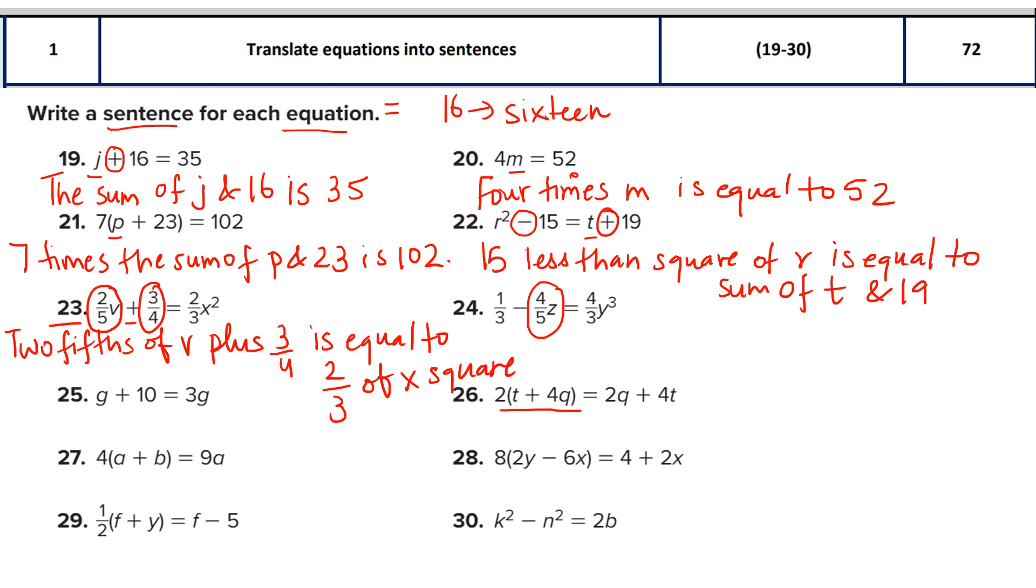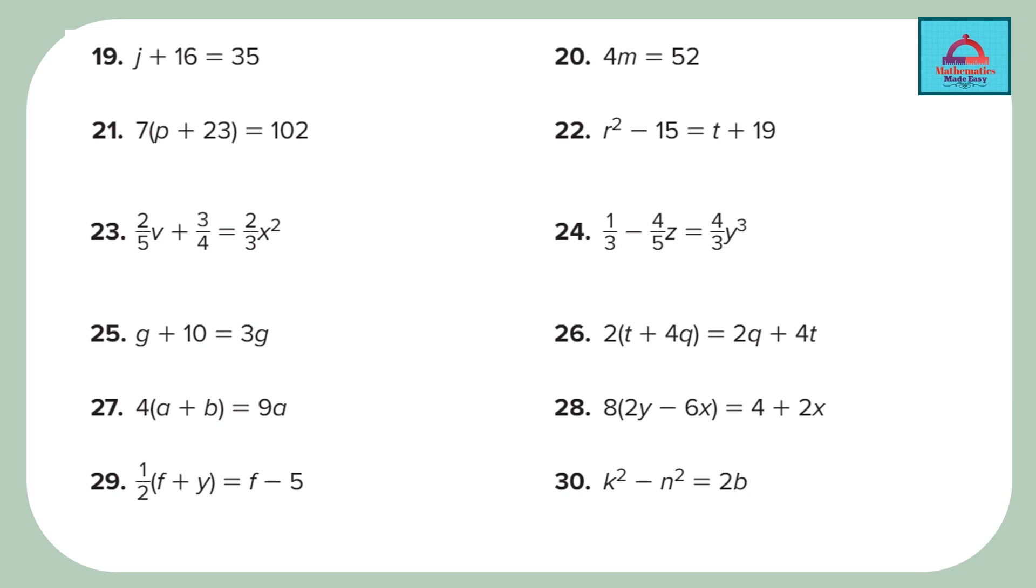Now let's similarly do the remaining questions in the next slide. I will do a few more questions here. Let's do 29 and 30. So here you see multiplication of 1 over 2. 1 over 2 can also be said as half. So we can write half of the sum of - now what are the two variables? f and y. So f and y is, we can directly write is 5 minus - sorry f minus 5, or you may also write is equal to f minus 5 or 5 less than f. Both are correct.